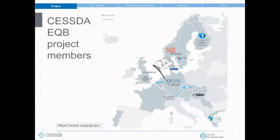The CESSDA Euro Question Bank project started in 2016 and is funded by CESSDA — the Consortium of European Social Science Data Archives — an alliance of social science data archives of currently 20 member countries. In the EQB project, we are currently 10 CESSDA service providers working on EQB. GESIS has the lead of the project and is responsible for project management and technical development. CESSDA creates and runs services for the social sciences, one of which is the Euro Question Bank, currently under development.